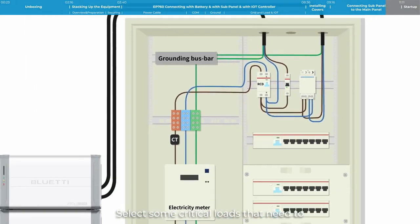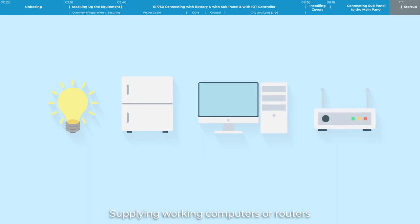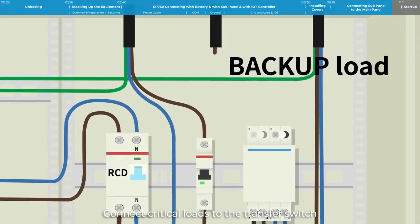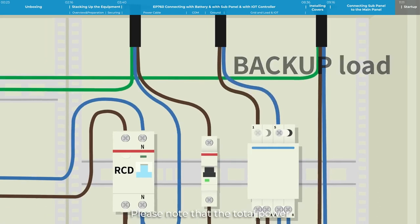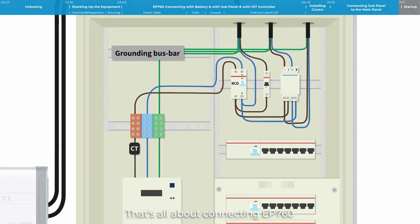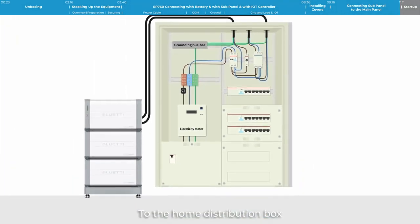Select some critical loads that need to operate during mains failure, e.g., lights, refrigerators, circuits supplying working computers or routers. Connect critical loads to the transfer switch, L to pin 0, N to pin 5. Please note that the total power of essential loads is less than 7,600W. That's all about connecting EP760 to the home distribution box.